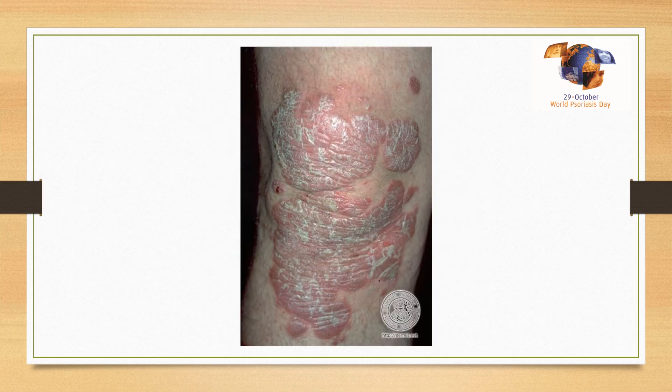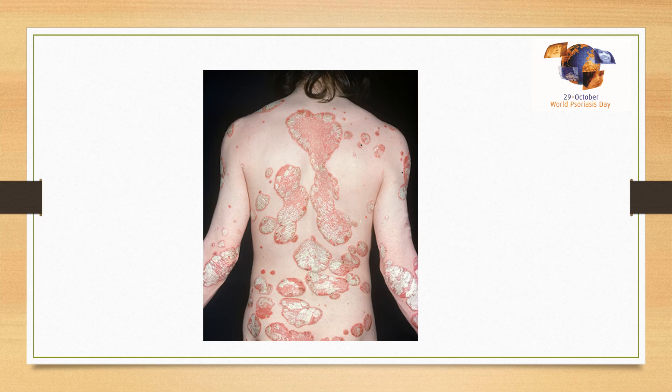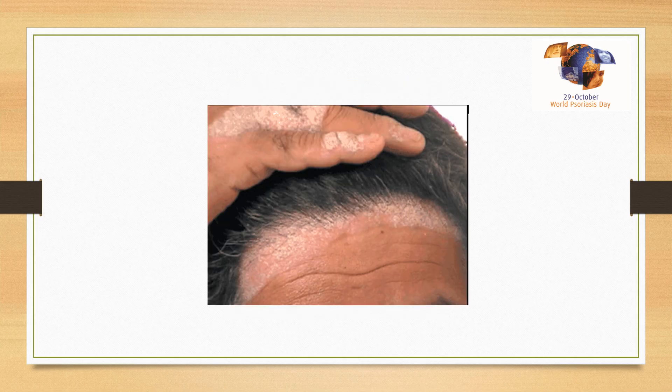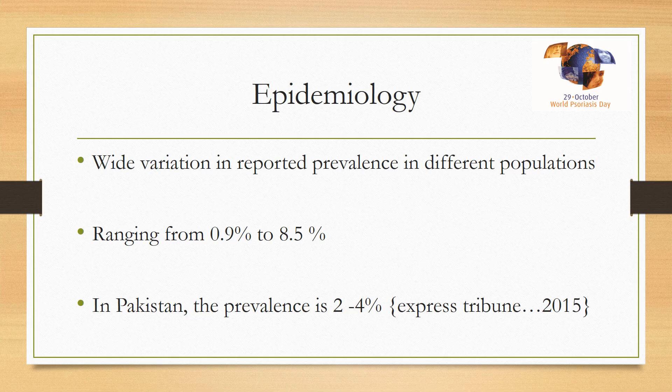Here is the involvement of the scalp — well-demarcated plaques extending beyond the margin of the scalp with silvery scales, and the underlying tissue can still be seen through the scales. This is again the site of predilection. Here is the surface of the knee, and again the back with erythematous plaques with heaped-up scales. And you can see the dorsal surface of the hand involvement with psoriasis.